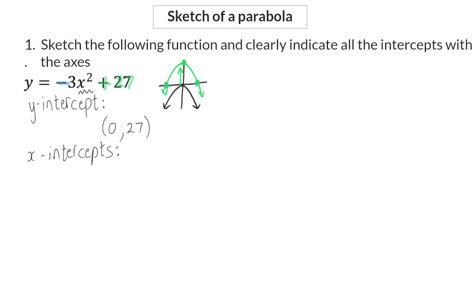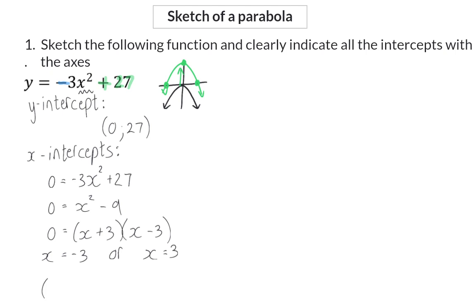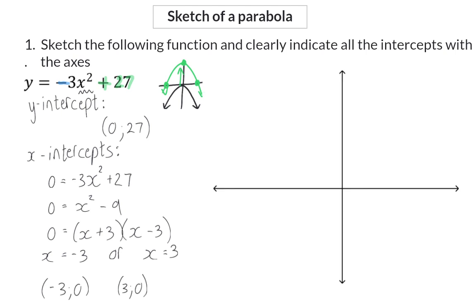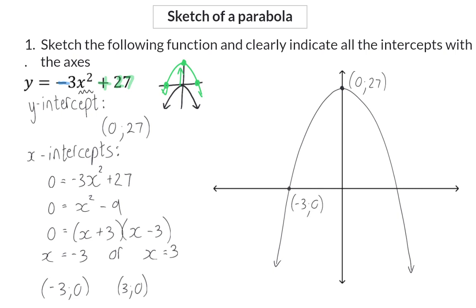To calculate the x-intercept, substitute y equals zero into the equation and solve for x. The coordinates for the x-intercepts are at minus three zero and at three zero. Now we're ready to draw the graph — first draw the form of the parabola, then add the coordinates. The y-intercept is at 0, 27 and the x-intercepts are at minus three and three. It is also good to indicate the axis of symmetry, which in this case is x equals zero.